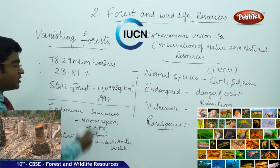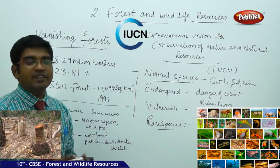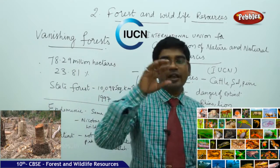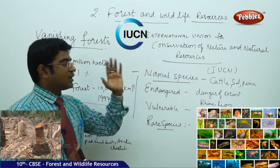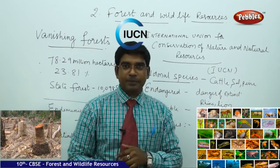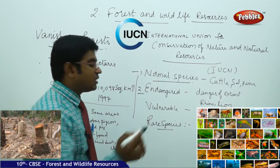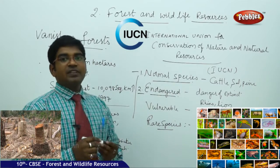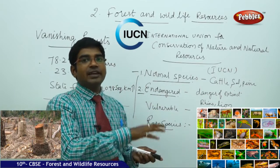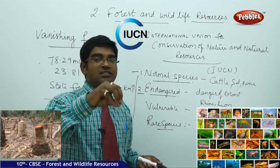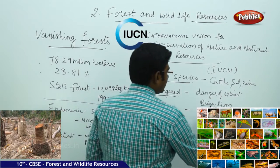The first category is normal species — these are species whose population levels are equal to normal levels. Examples of normal species are cattle, sal, and pine. The second category is endangered. Endangered animals are those in danger of extinction — they have fallen from normal levels to a situation where they may no longer be found. Examples are rhino and lion.